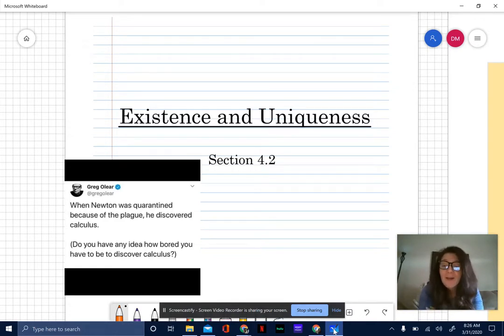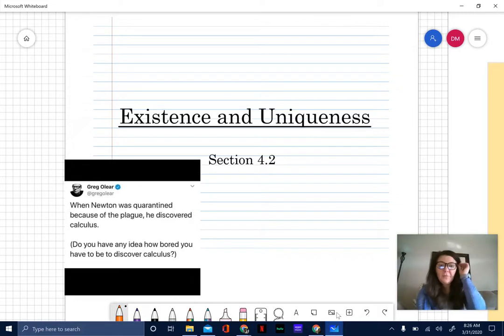We're doing 4.2 Existence and Uniqueness. You've probably gotten the idea from all the previous chapters that we've looked at in diff eq - we typically see this 0.2 lesson as our existence and uniqueness section. Got a little tweet here for you if you haven't already read it.